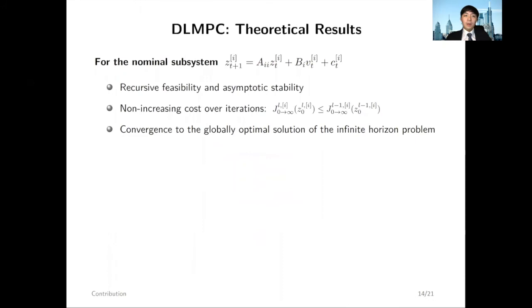We have quite strong guarantees for our control method. First, in terms of nominal subsystems, we can guarantee recursive feasibility and asymptotic stability at all times. In terms of control performance, we can guarantee the results converge to the globally optimal solution of the infinite horizon problem, and the cost over iterations will be non-increasing.